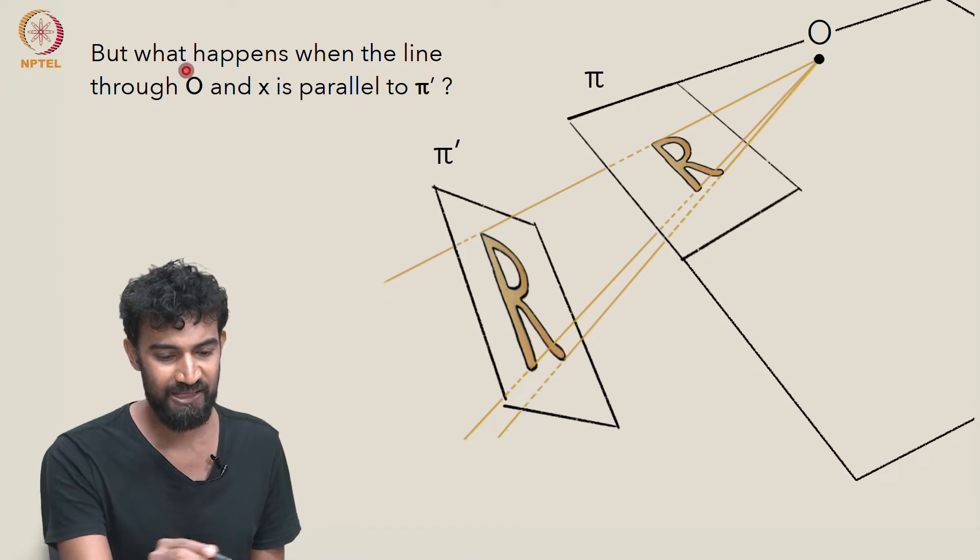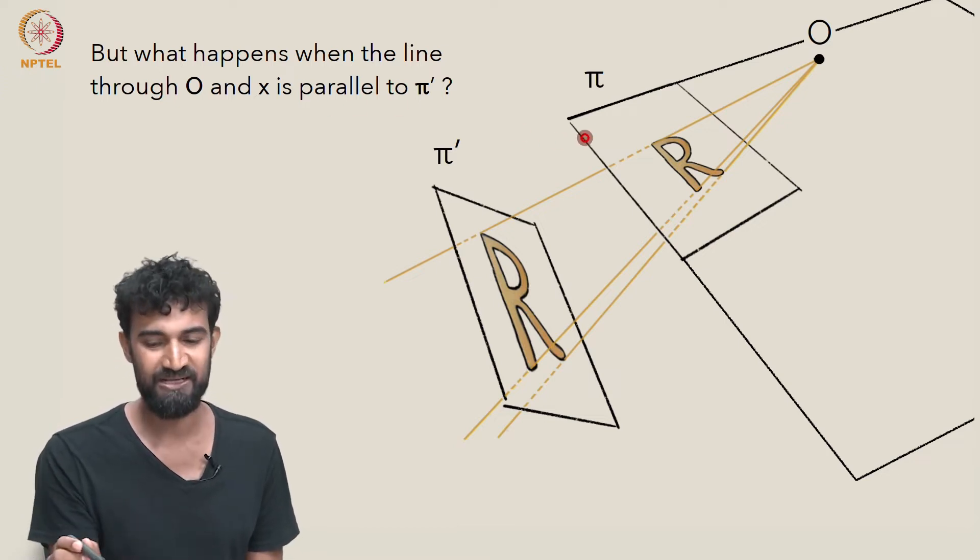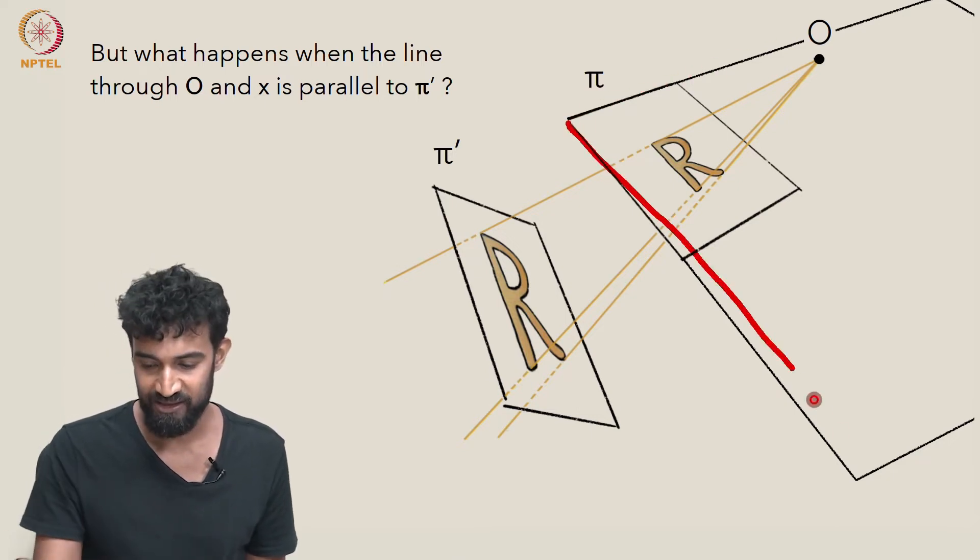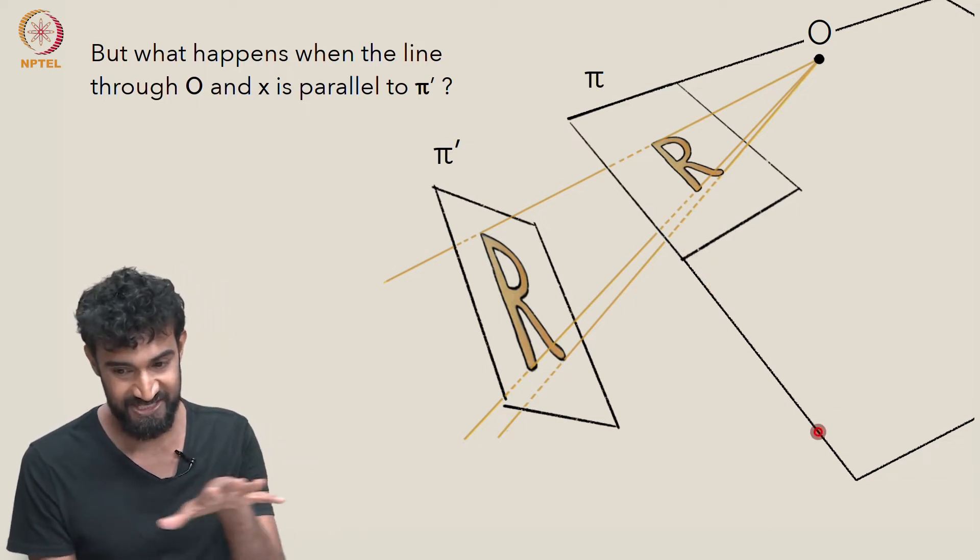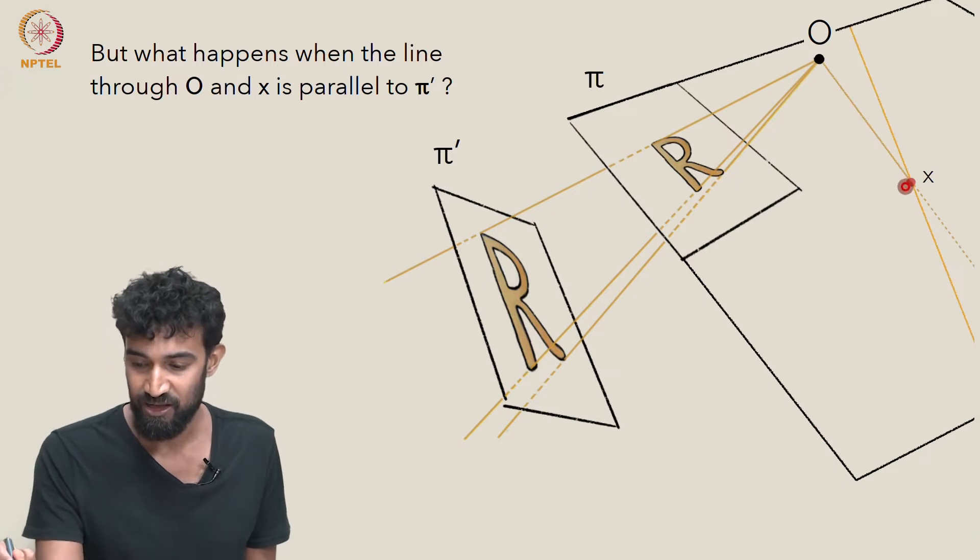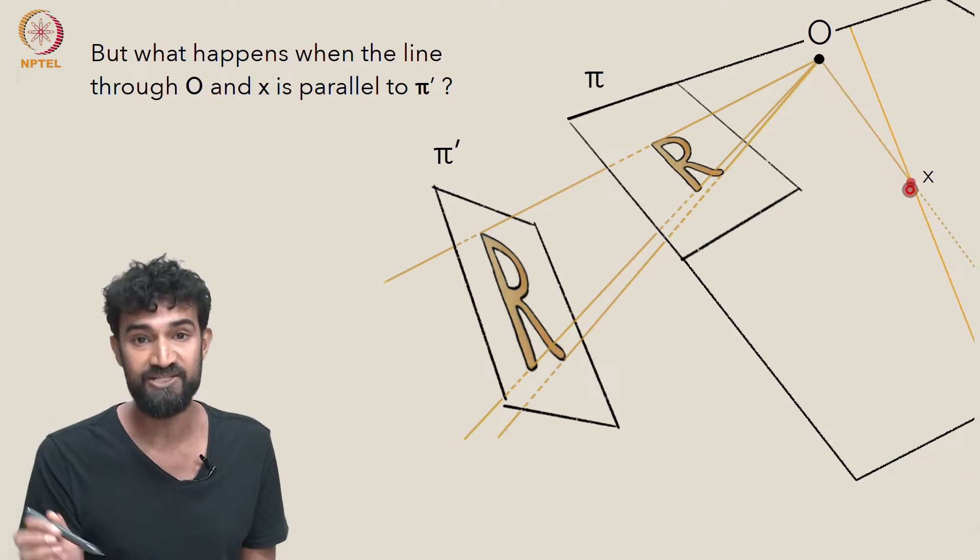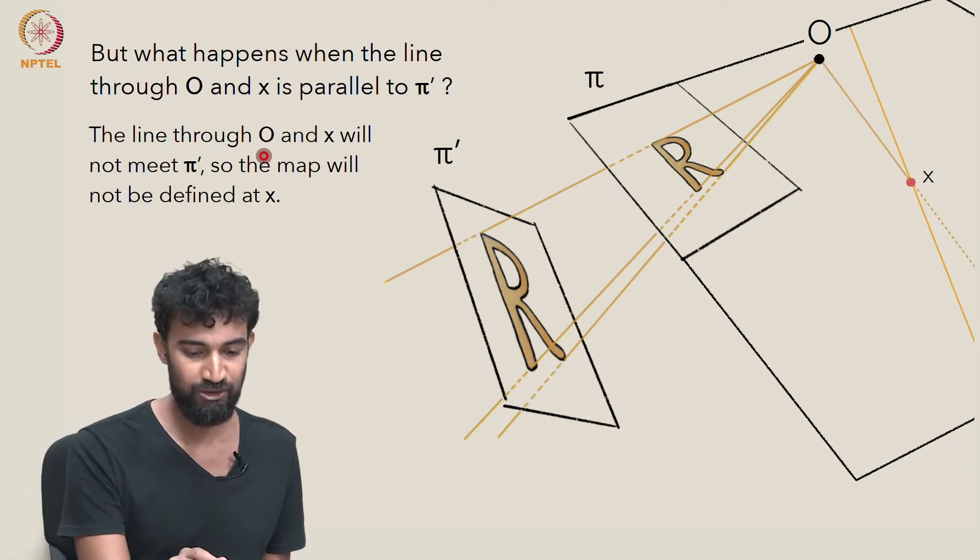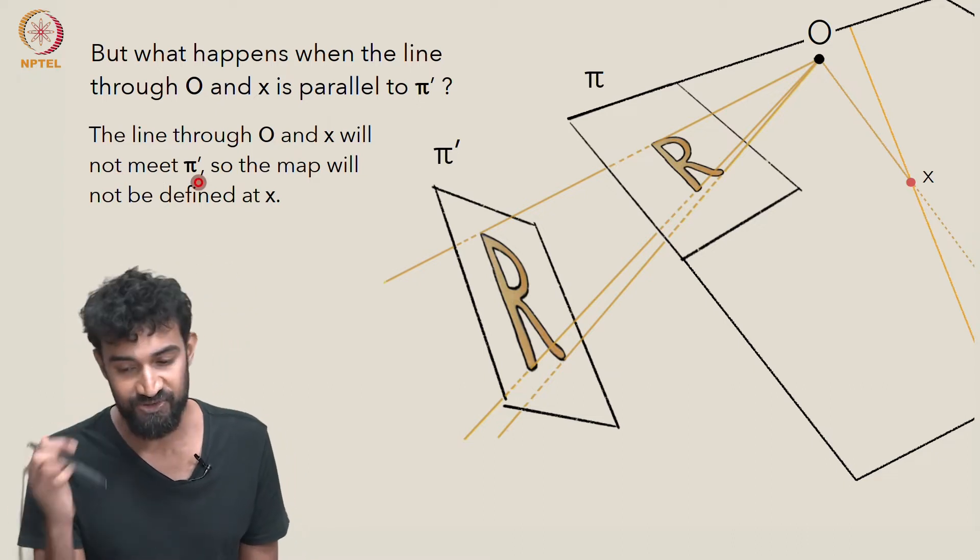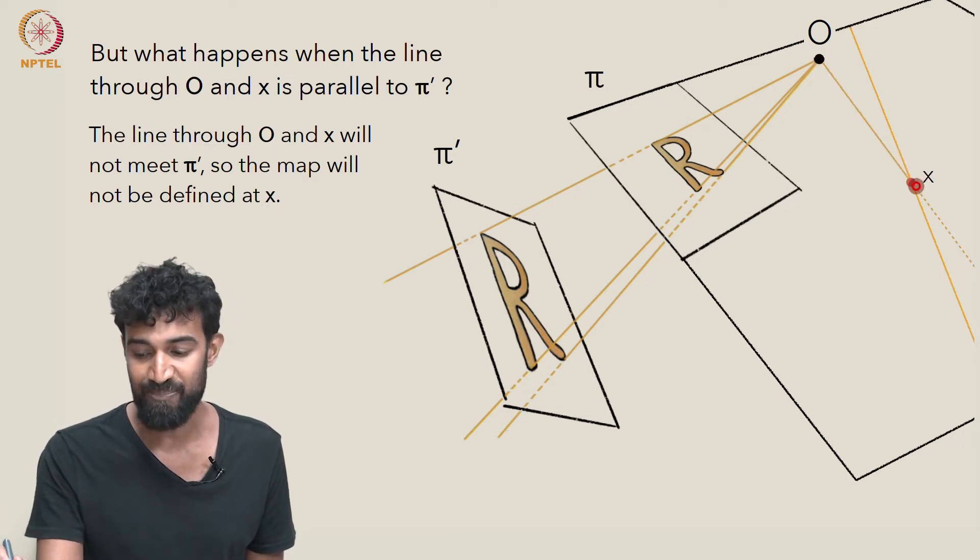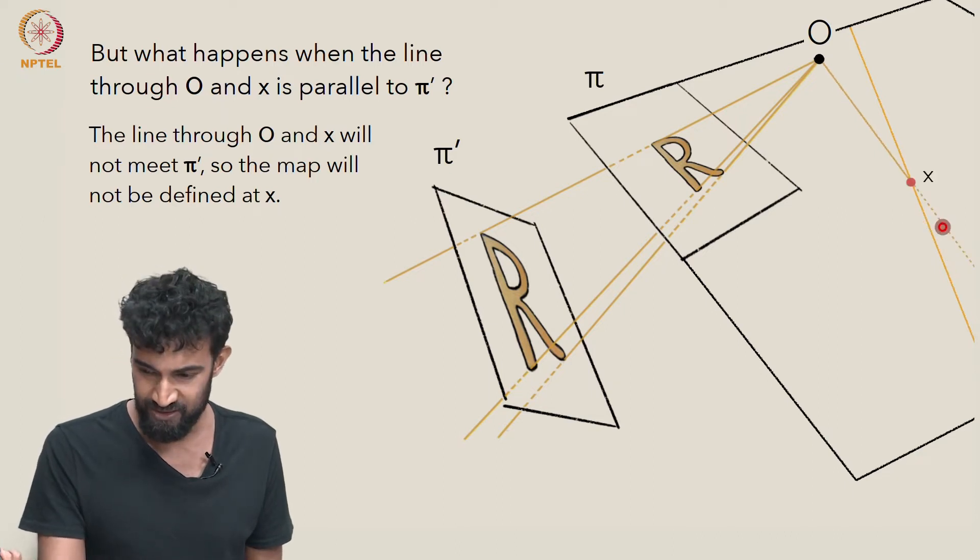But what happens when the line through O and x is parallel to π'? In other words, the line through O and x doesn't hit π' at all. To see an example of that, let's extend our plane π, make it bigger. Let's pick a point x on π such that Ox is actually parallel to this plane π'. So Ox now is not going to hit π' anywhere. The line through O and x will not meet π'. And as a result, this map γ, the perspectivity, doesn't seem to be defined on x.